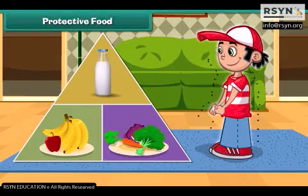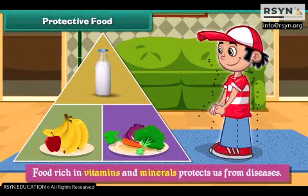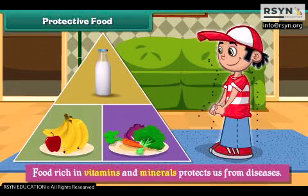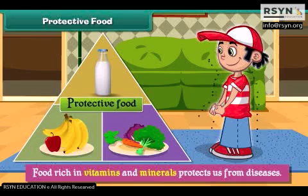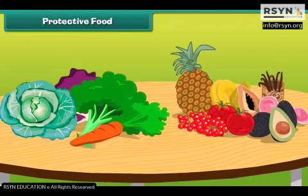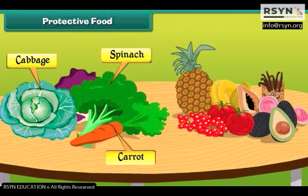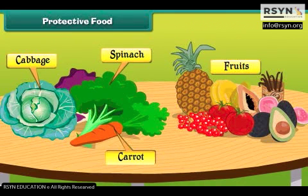Food rich in vitamins and minerals protects us from diseases. Therefore it is called protective food. Green leafy vegetables such as spinach and cabbage, carrots and fruits have lots of vitamins and minerals.